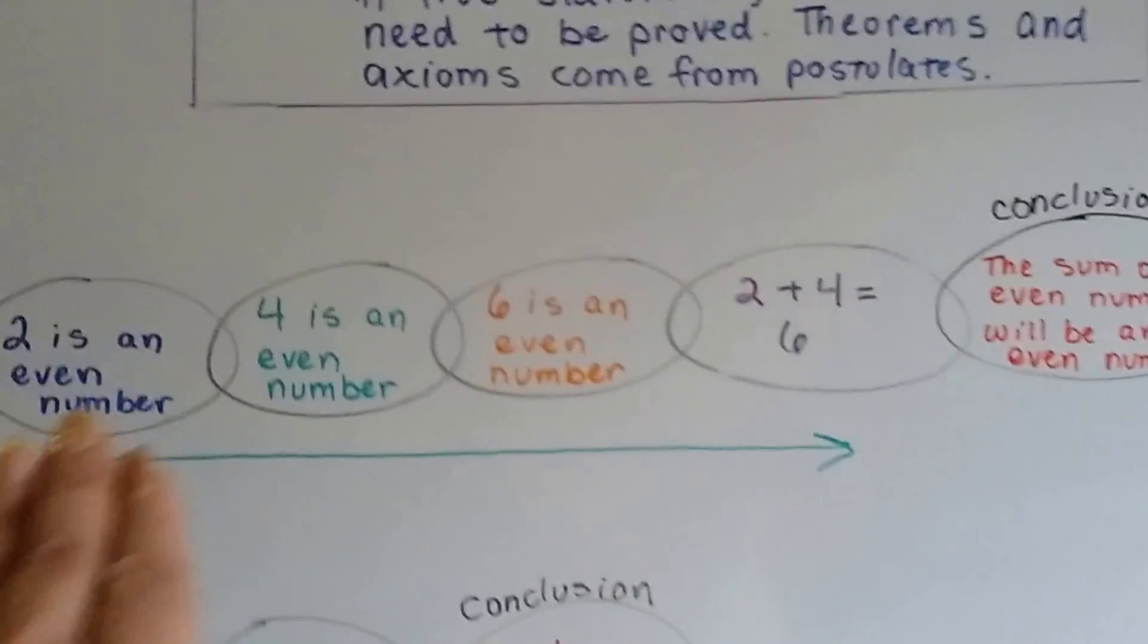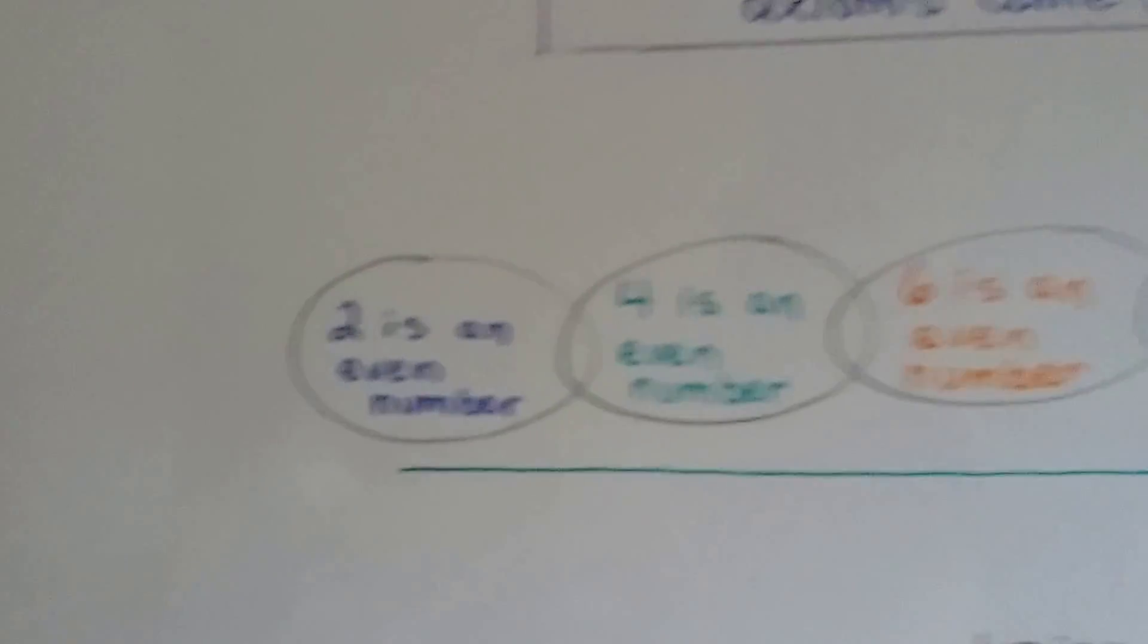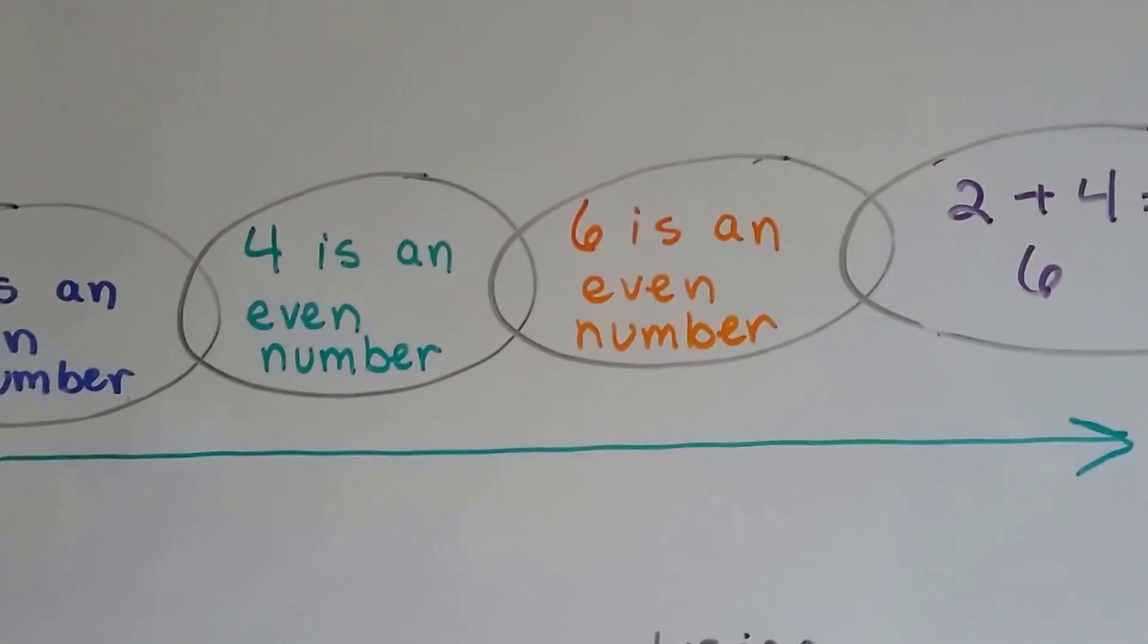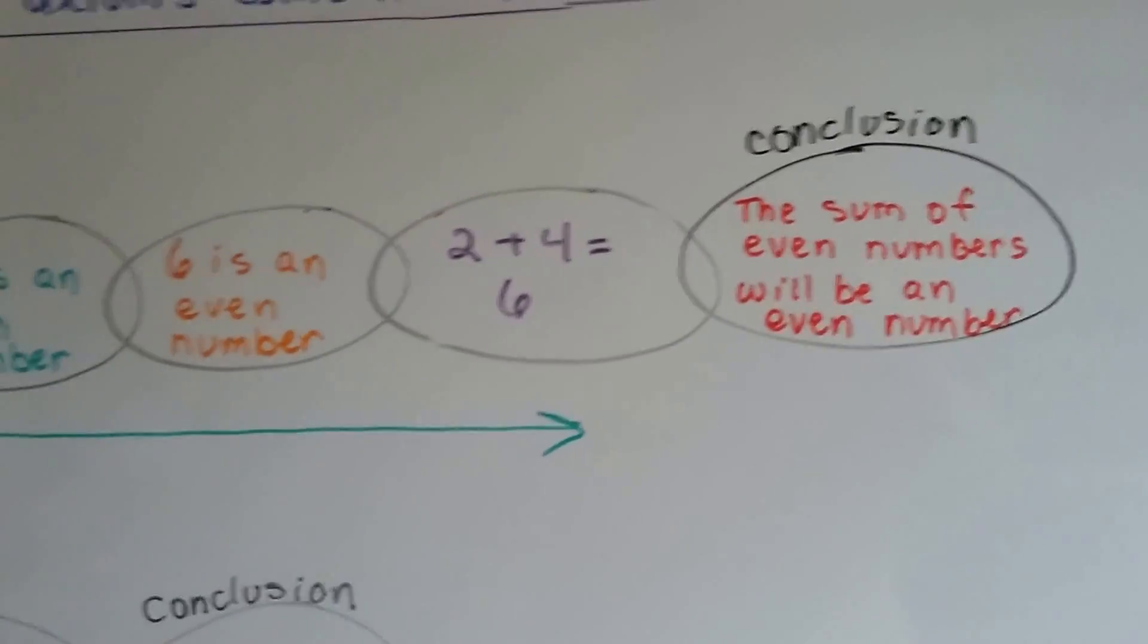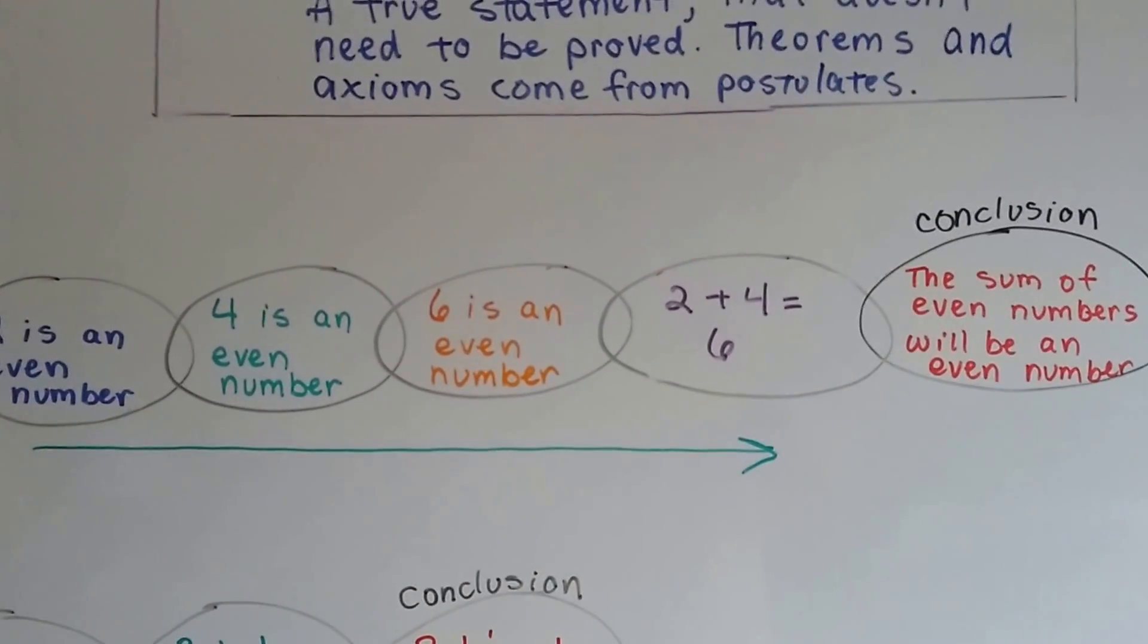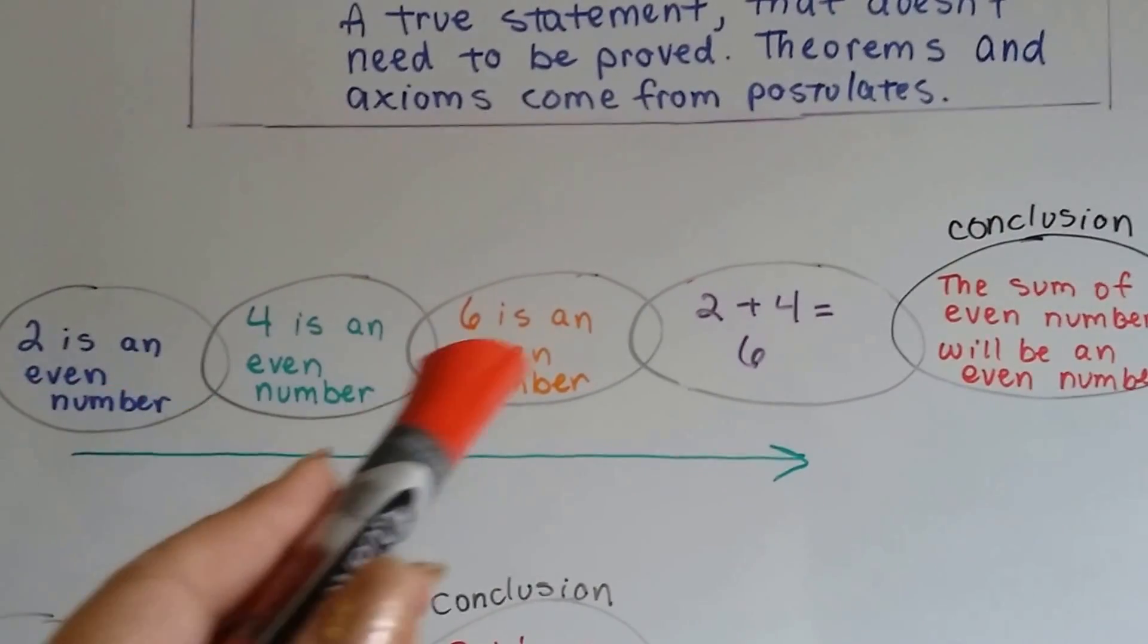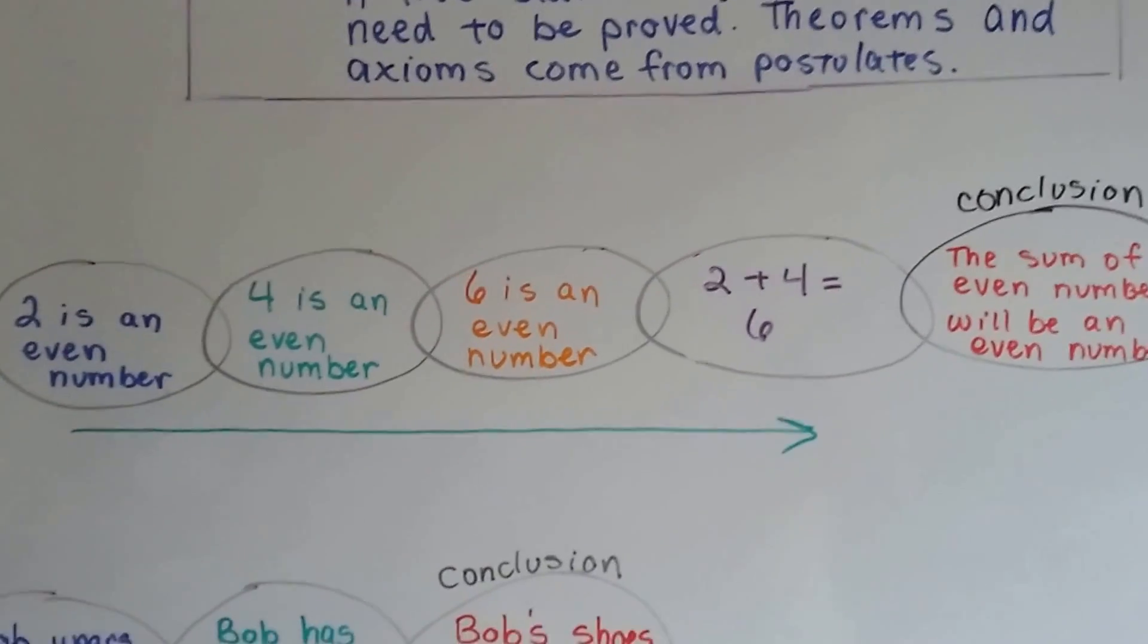So let's take a look at a chain. Here we've got a bunch of ovals linked together like a chain. And here's our chain of reasoning. Two is an even number. Four is an even number. Six is an even number. Two plus four is six. So our conclusion? The sum of even numbers will be an even number. That's actually true. Did you know that? Well, that's our chain of reasoning. We started with some ideas and we got to each different level and came up with a conclusion. See that?